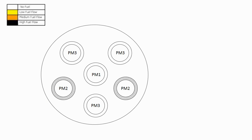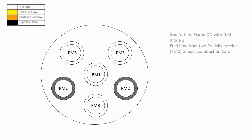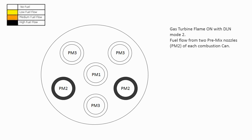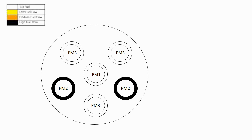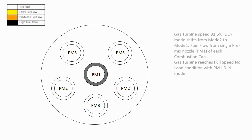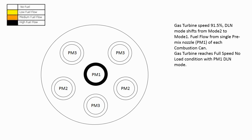7FA gas turbine flame-on with DLN mode 2. Fuel flows from two premix nozzles PM2 of each combustion can. When 7FA gas turbine speed reaches 91.5%, DLN mode shifts from mode 2 to mode 1. Fuel flows from single premix nozzle PM1 of each combustion can.